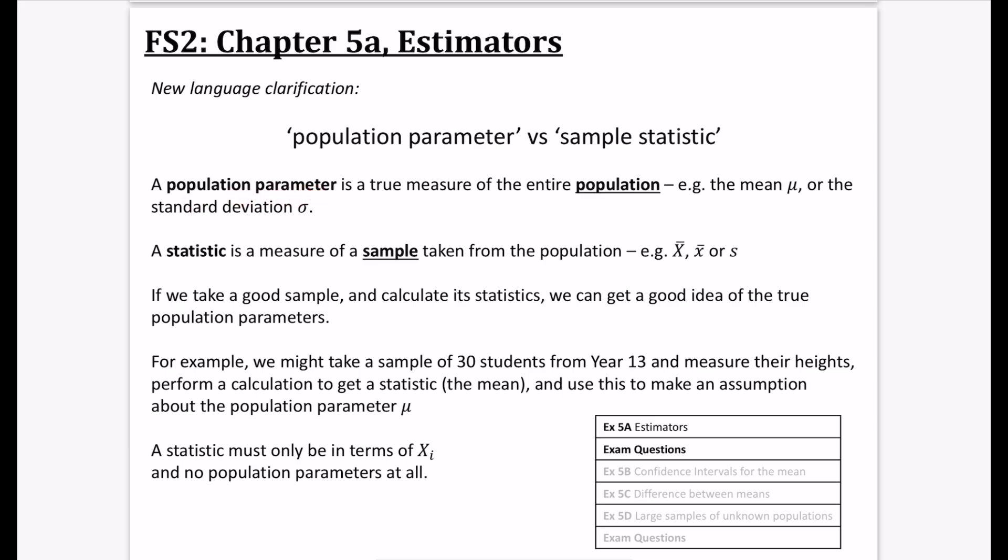A population parameter is a true measure of the entire population. When we talk about population, we're not saying the population of the UK - we're talking about the entire thing we're studying. For example, the average weight of fish in a lake - the population of fish would be all of them. Population parameters would be like the mean μ or standard deviation σ, things that are completely true and don't vary.